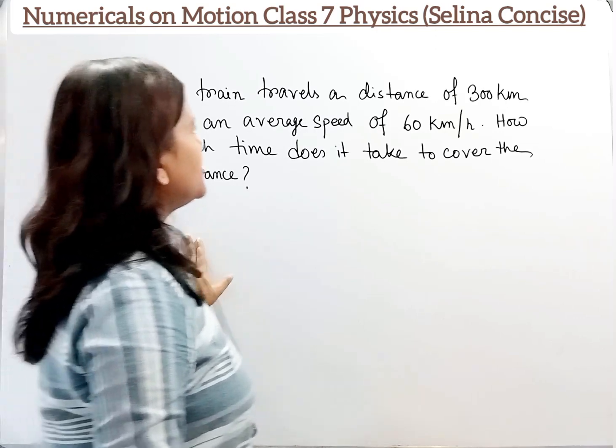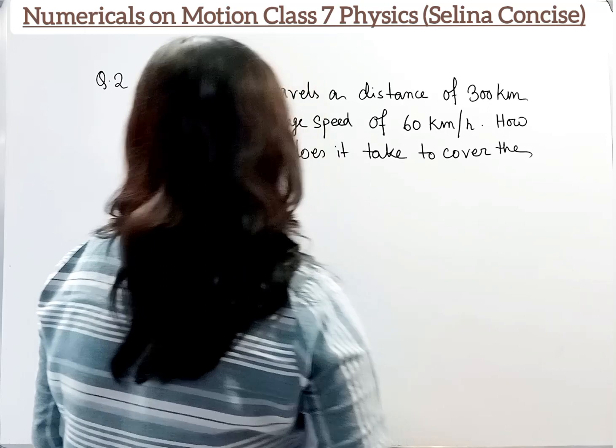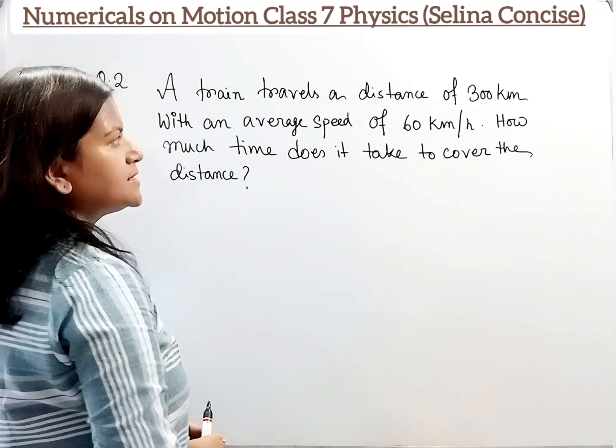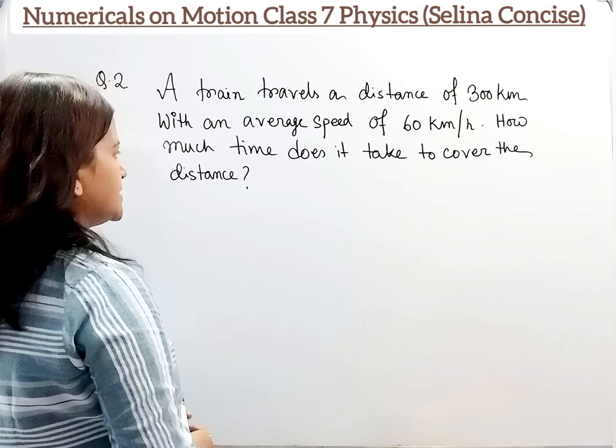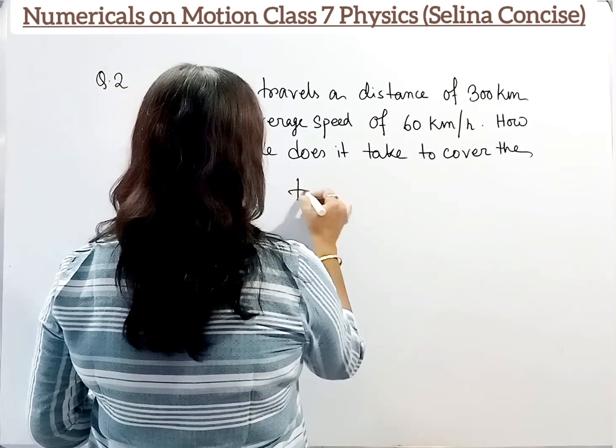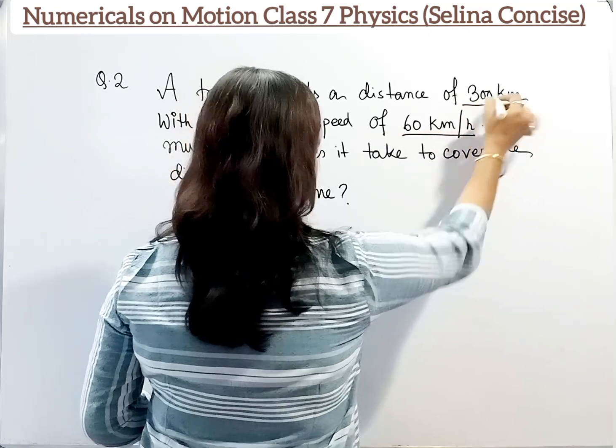Now question number 2. A train travels a distance of 300 km with an average speed of 60 km per hour. How much time does it take to cover the distance? So we have to find out time. Speed is given, distance is given.